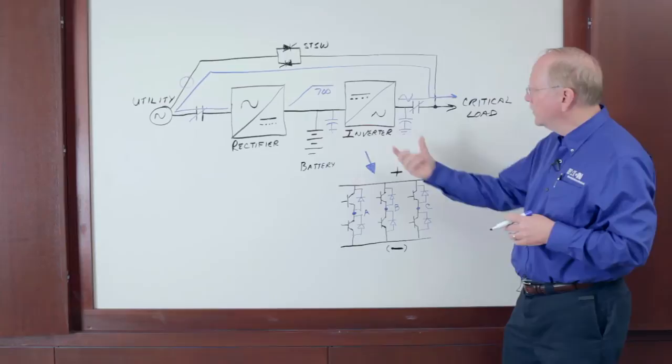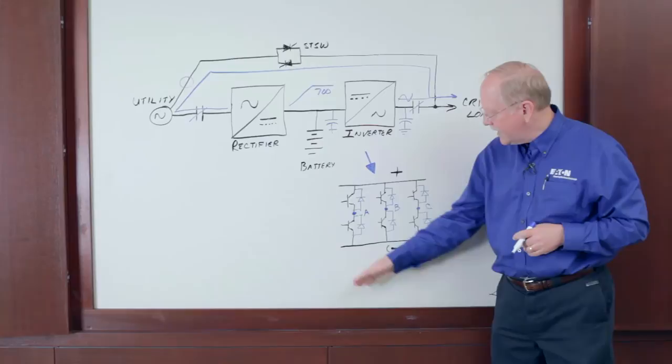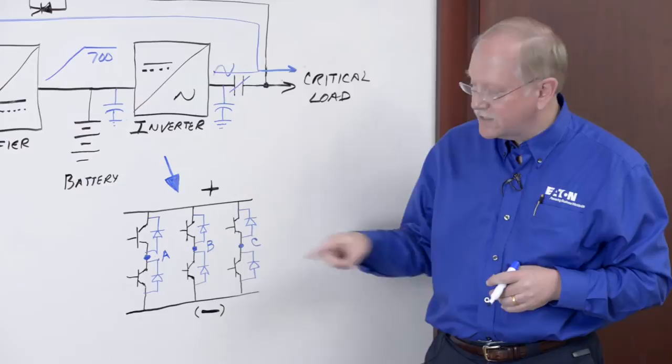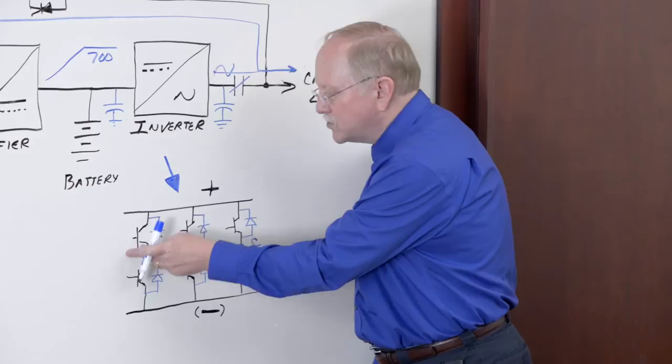But what about this rectifier that has to charge these capacitors over 30 seconds from 0 to 700 volts? How do we do that? Well, if we look at the schematic of the inverter, the inverter's job is to take DC and create AC. Schematically, it looks like this. Here's positive and negative DC, and the inverter transistors create phase A, B, and C, a three-phase AC output.